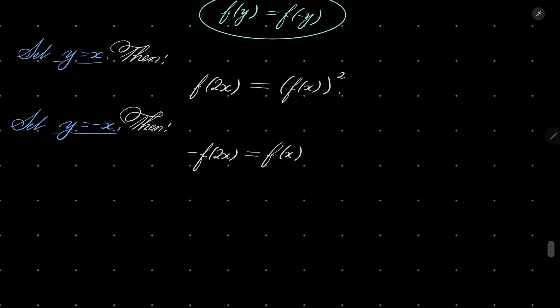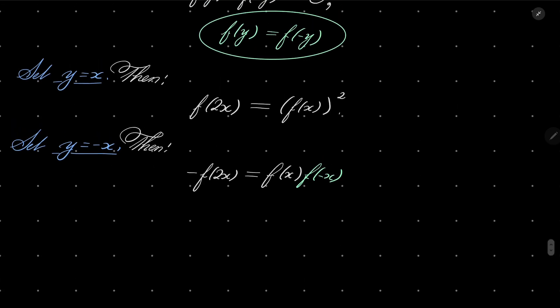f(x)f(-x), but remember that our function is even, so f(-x) can be replaced just by f(x), because our function is even. Alright, but now, of course, that can be written as f(x) squared.